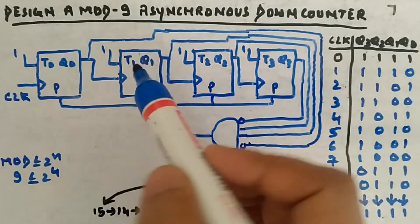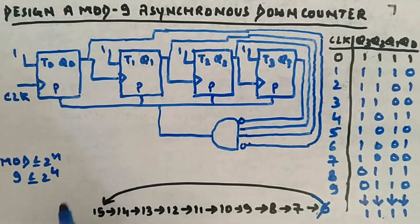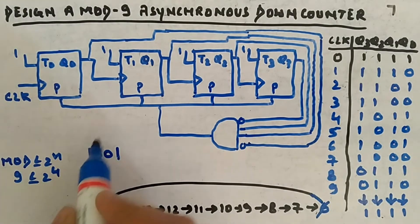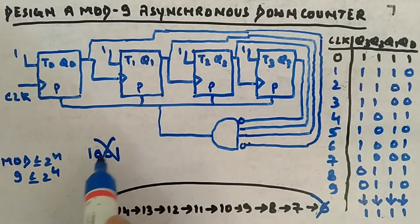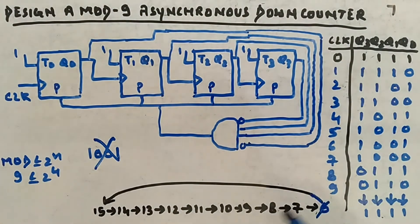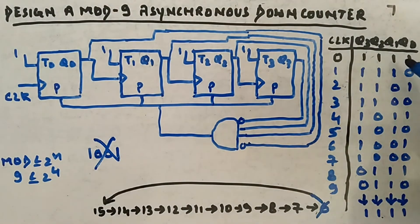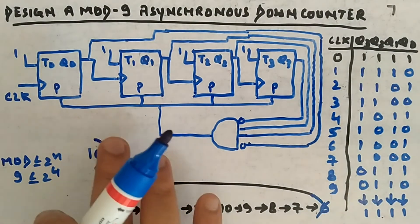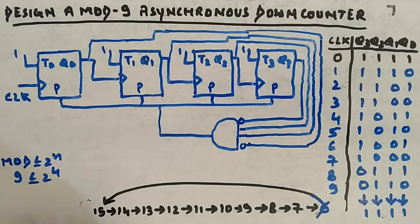One more important thing: just like we had a shortcut in up counters, do NOT apply that shortcut here. In up counters, mod-9 means 1,0,0,1 and you feed that to the AND gate. That does not work in down counters. In a down counter, 9 does not appear in the sequence in that position. You actually have to trace the sequence — you can see it is counting down — and only take the actual triggering value and feed it to the AND gate.